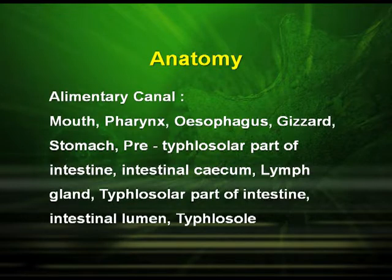The alimentary canal continues with the gizzard, stomach, pre-typhlosolar part of the intestine, intestinal caecum, lymph glands, the typhlosolar part of the intestine, the intestinal lumen, and the typhlosole.